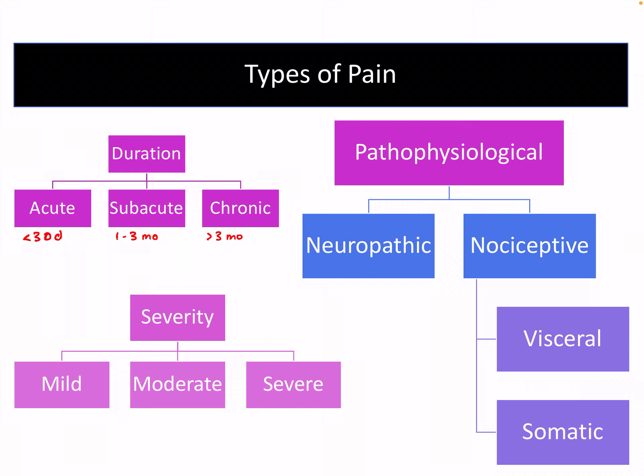Pathophysiology can be divided into two different things: neuropathic or nociceptive pain. The RX Prep book does mention that neuropathic pain can sometimes be called pathophysiological pain, but for our purposes we're going to divide this into neuropathic and nociceptive. It makes more sense to call it neuropathic pain because it does involve damage to the nerves and usually causes a stinging or burning sensation.